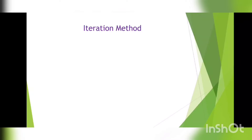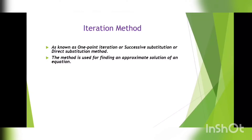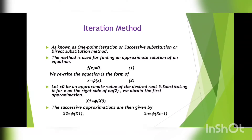The iteration method is known as one-point iteration, or successive substitution, or direct substitution method. The method is used for finding an approximate solution to an equation f(x) = 0. We rewrite the equation in the form x = φ(x). Let x0 be an approximate value of the desired root. Substituting it on the right side, we obtain x1 = φ(x0). The successive approximations are then given by x2 = φ(x1), x3 = φ(x2), and xn = φ(xn-1).